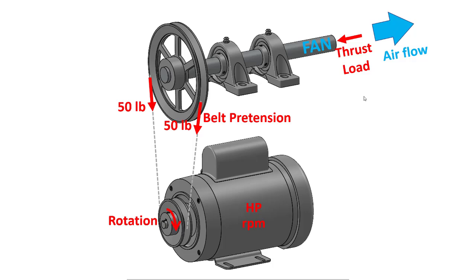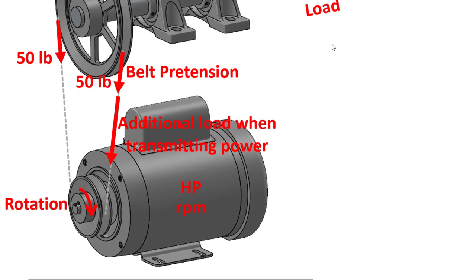When the electric motor begins spinning and transferring power, there is additional tension in one side of the belt drive since the belt is transferring power to the fan. In order to calculate that tension, we need to look at the name plate on the motor to see how much horsepower it can deliver as well as how fast it will be rotating.